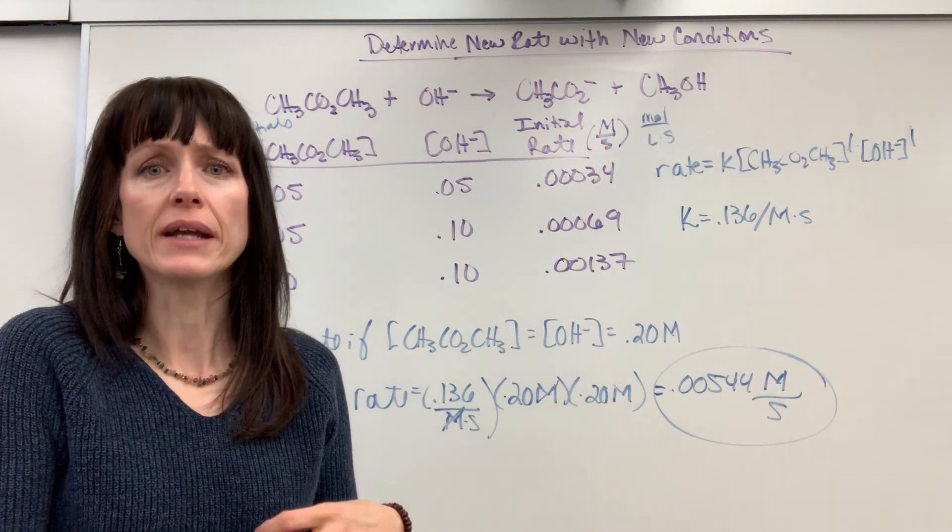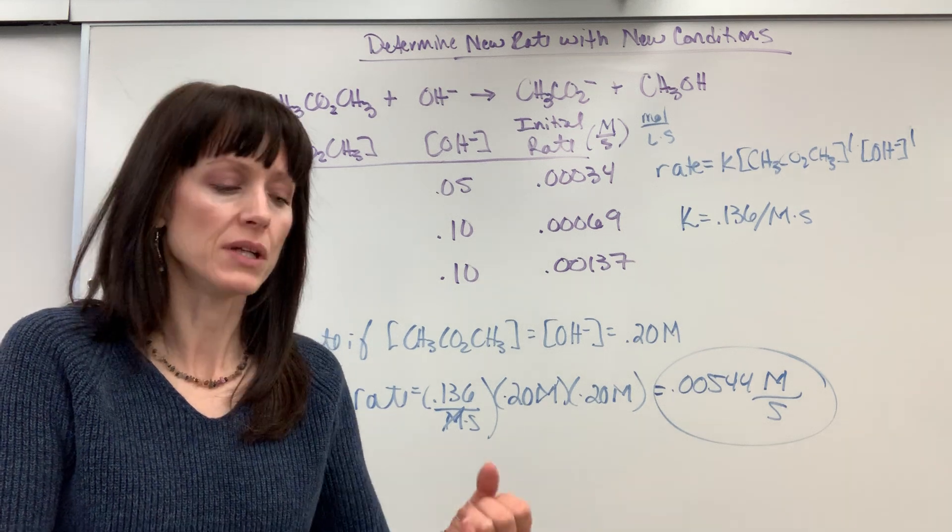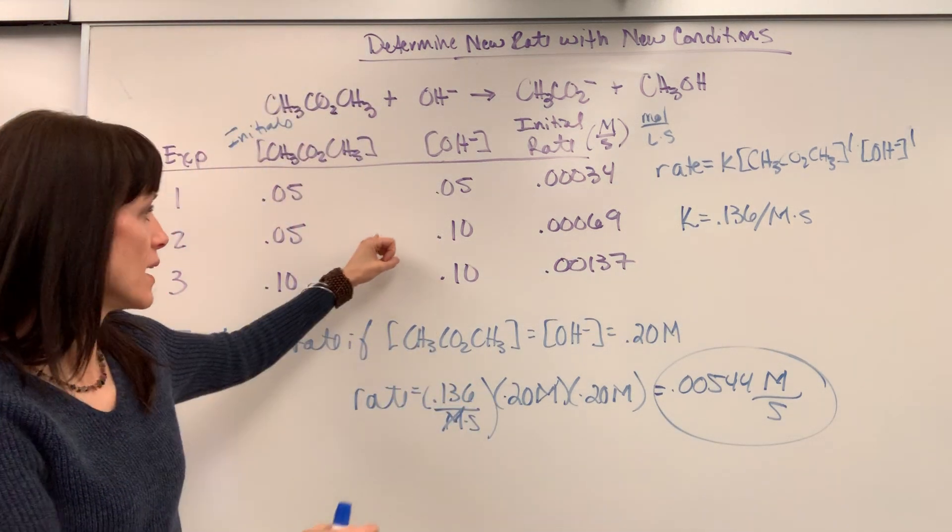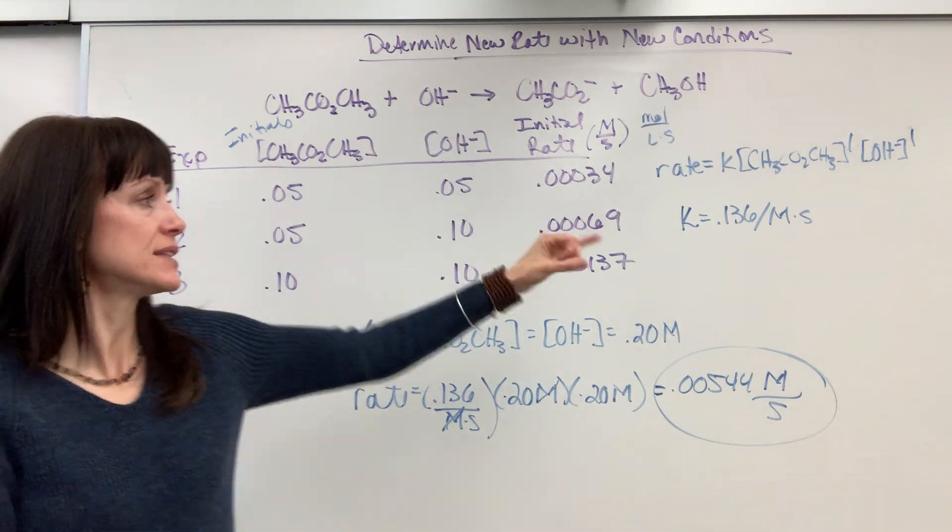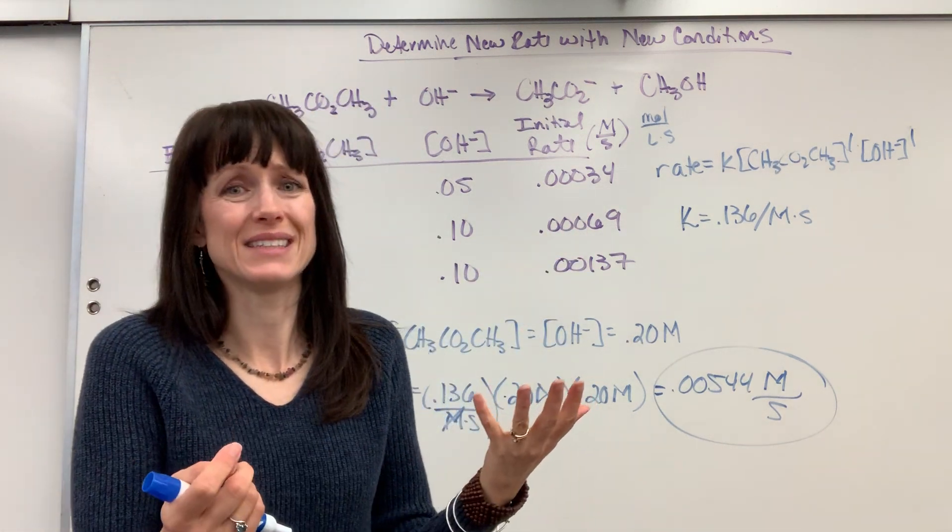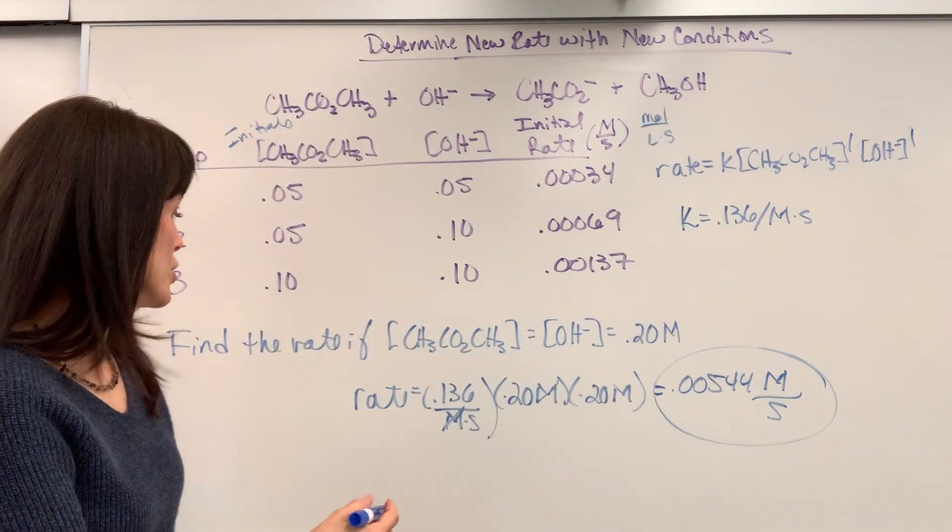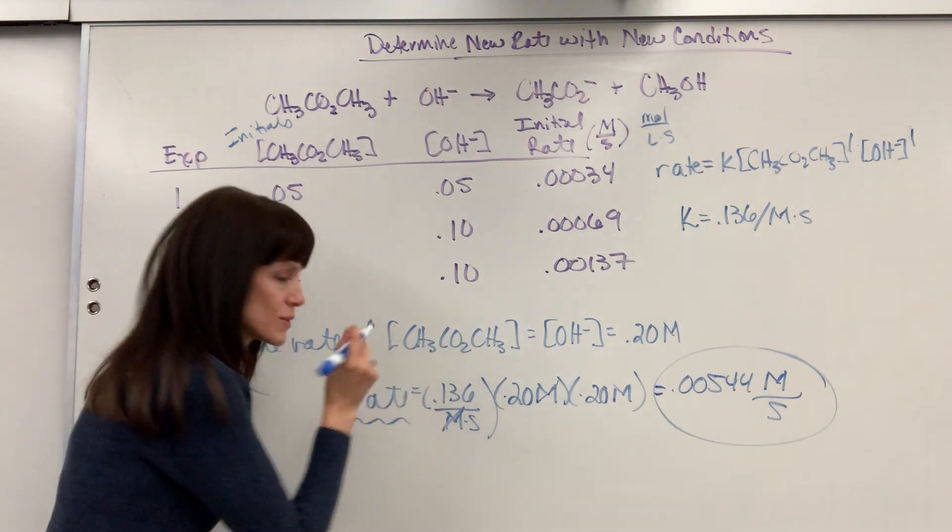So in order to find a new rate, you need to have the full rate law. You can determine that from the experiment. You need to have the value of K. But then it's easy. Just plug everything in. Your one unknown is going to be rate.